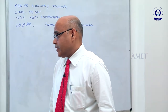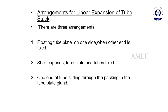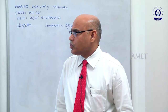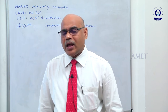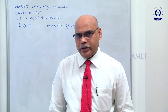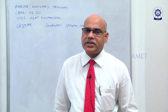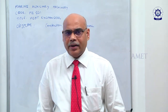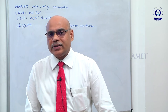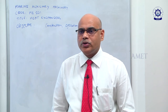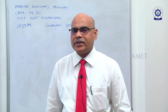Arrangements for linear expansion of the tube stack — there are three methods. One is that one end of the tube is fixed and the other end is freely floated. The second method is that both tube end plates are fixed but the shell is allowed to expand. The third method is one side of the tubes is fixed and the other side the tubes can expand in a stuffing box.